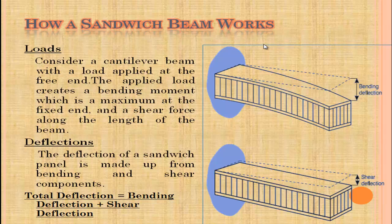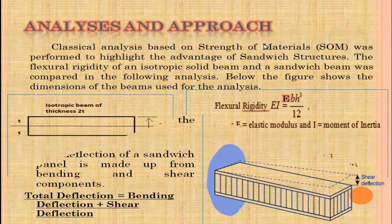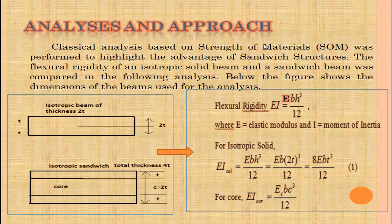How a sandwich beam works: consider a cantilever beam with a load applied at the free end. The applied load creates a bending moment, which is maximum at the fixed end, and a shear force along the length of the beam. The deflection of a sandwich panel is made up of bending and shear components: total deflection equals bending deflection plus shear deflection.